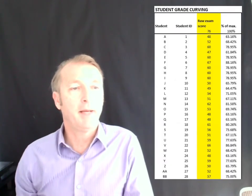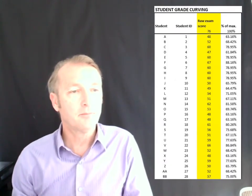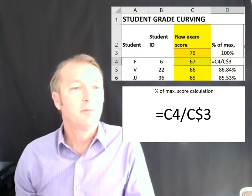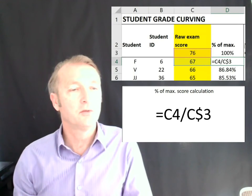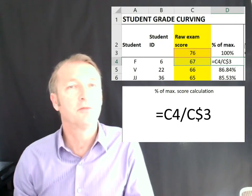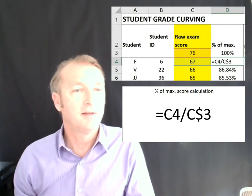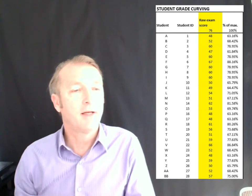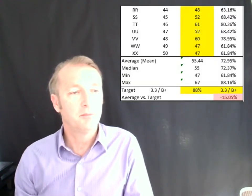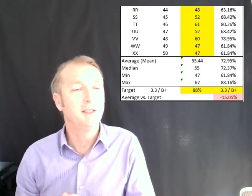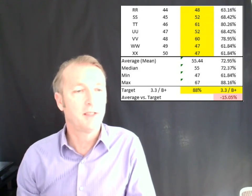The first thing I do is make a standard percentage calculation. The top one is calculated by taking the overall exam score for the student and dividing that by the maximum score. That's the standard percentage you find in Canvas, Blackboard, and other systems. I carry over the calculation for mean, median, minimum, and maximum. Right now we have an average score of 72.95%. The target was 88, so we are 15% lower than the target — we definitely need to curve the grades.